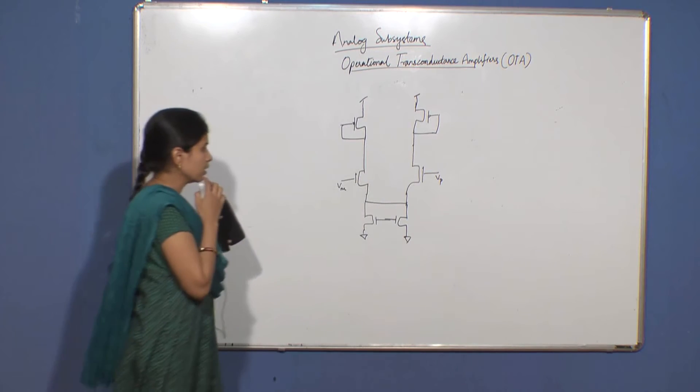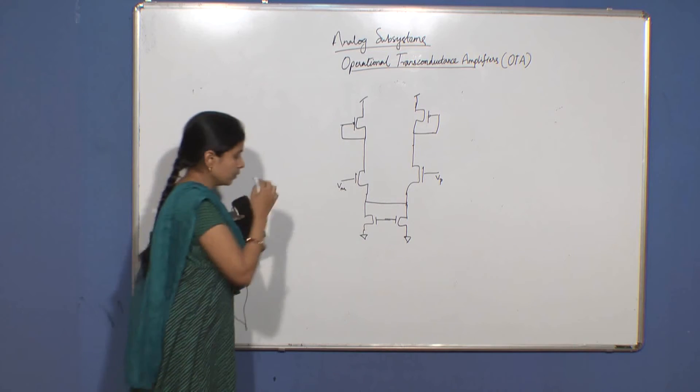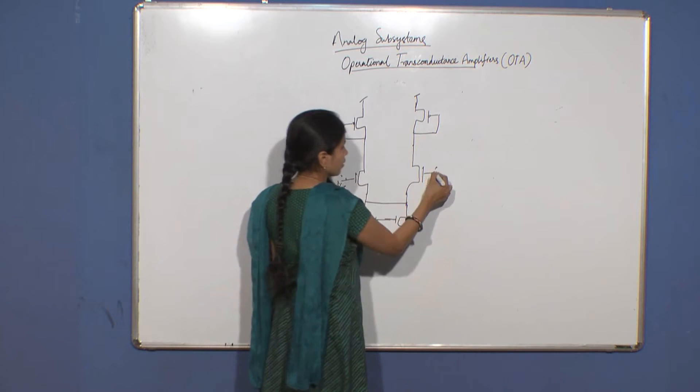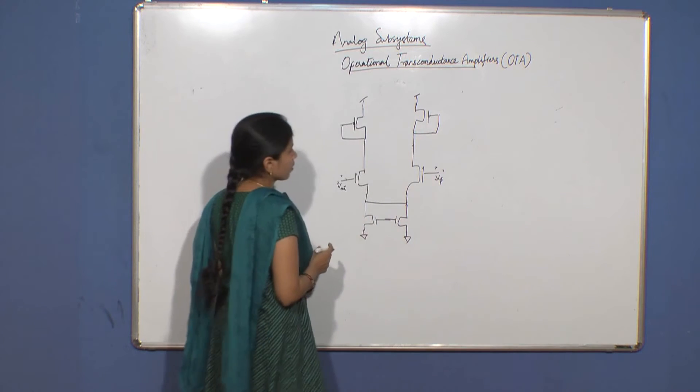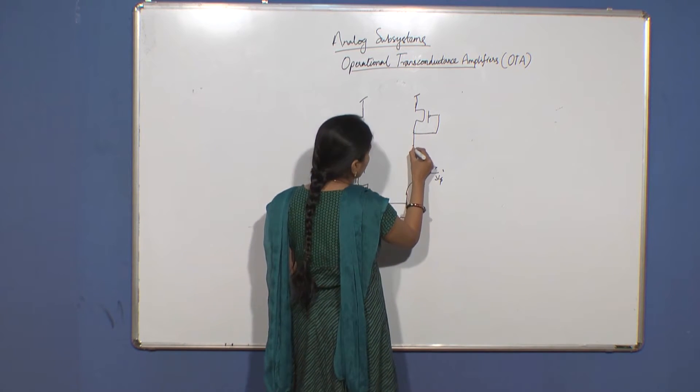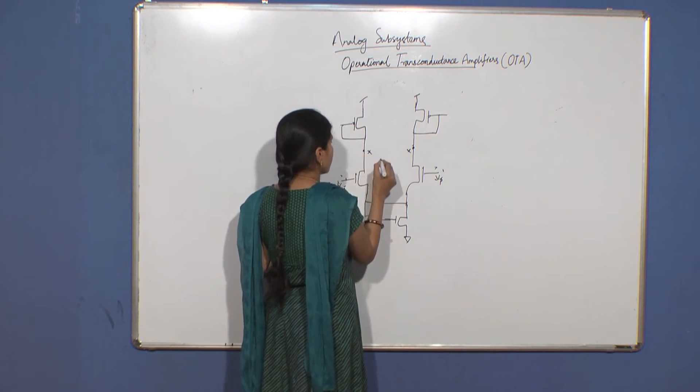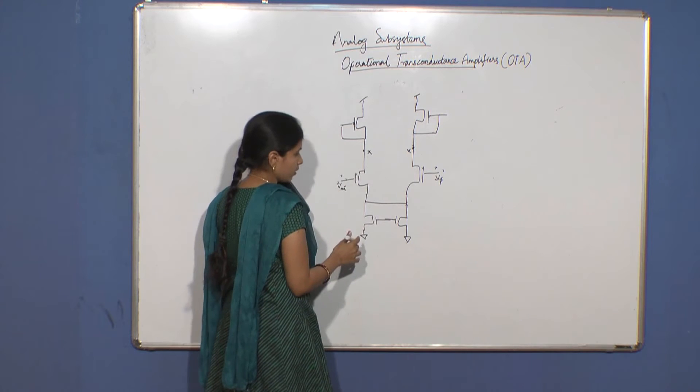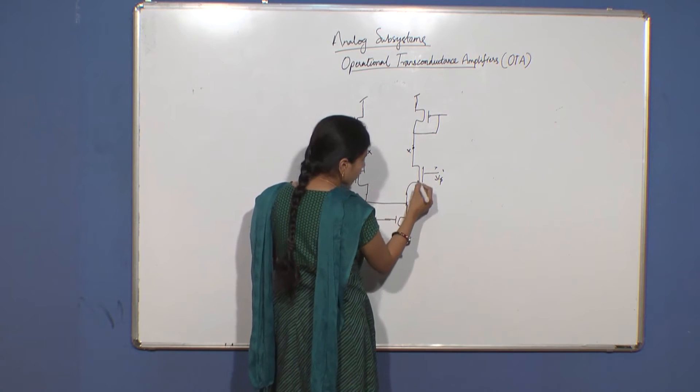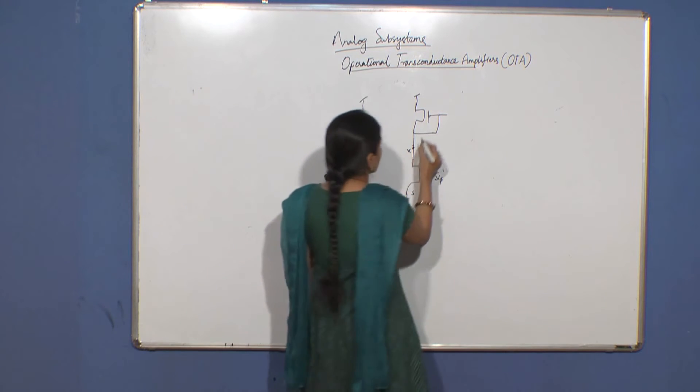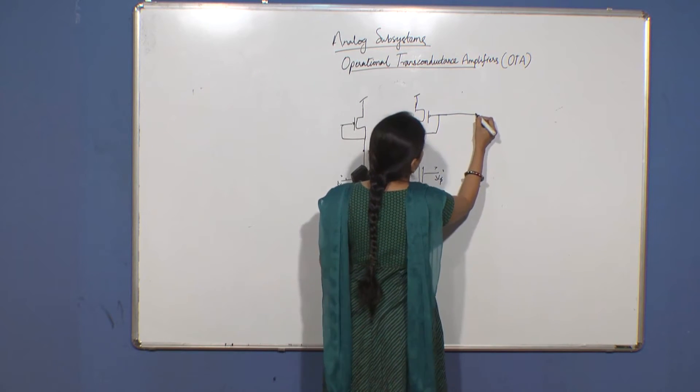You can see that these two are high impedance nodes. What about the output? This is not a high impedance node because you have a gate-drain connected device here. This is also not a high impedance node - you have a gate-drain connection, and this is also not high impedance because this is a source of a MOSFET. So you have to mirror this current somewhere here.